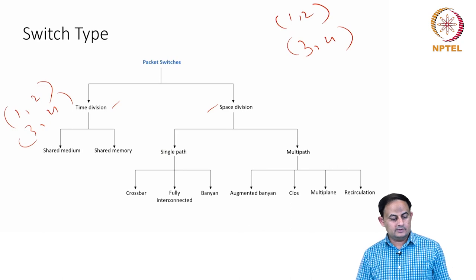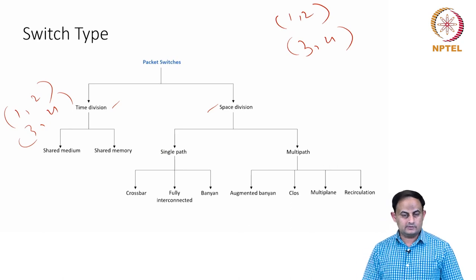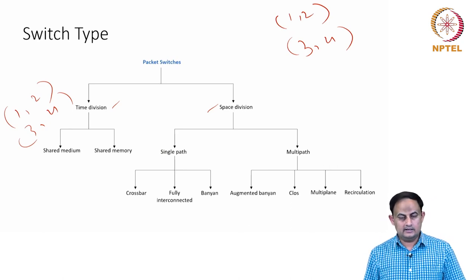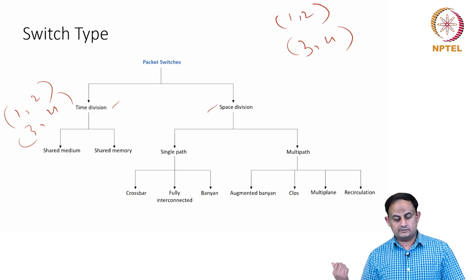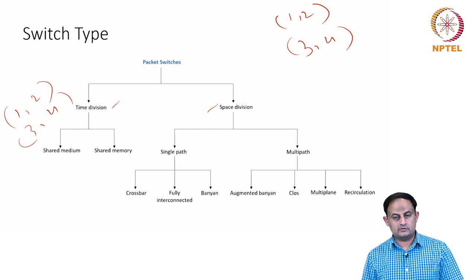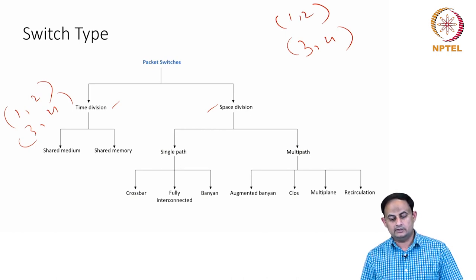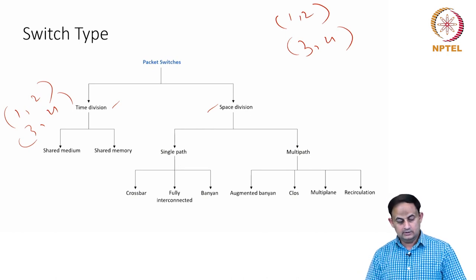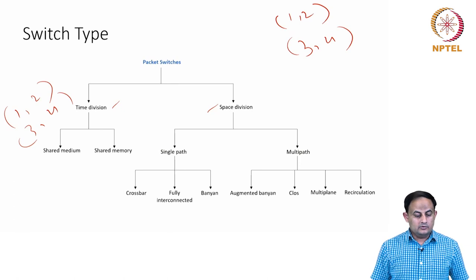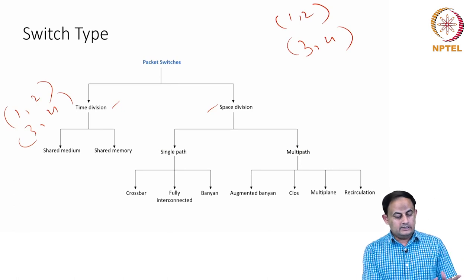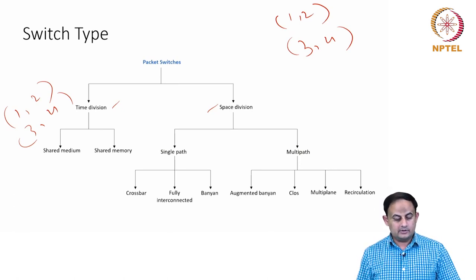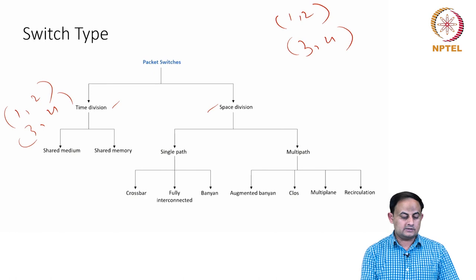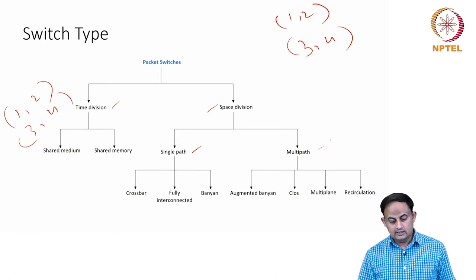Among the time division category, you have something called shared medium and shared memory. Among the space division, you have something called single path and multi-path. We will look in detail at what shared medium and shared memory are, but first let us understand what single path and multi-path mean.